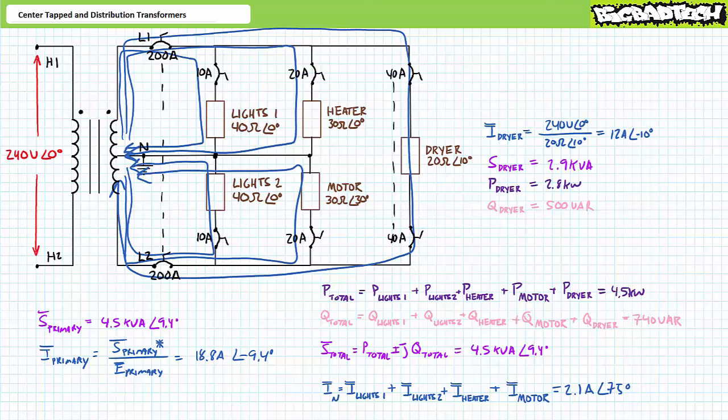You note the single phase loads require the neutral line to function as intended. As these examples illustrated, any imbalance between L1 and L2 results in current traveling in the neutral line. Only in the very rare occasion with equal loads on the opposite phases does it result in no current traveling in the neutral line. This is one of the compelling reasons circuit breakers make or break connection with the hot or high side of the distribution transformer rather than the neutral line. With the system in its present condition, the single phase loads experience exactly 120 volts and the dryer experiences 240 volts.